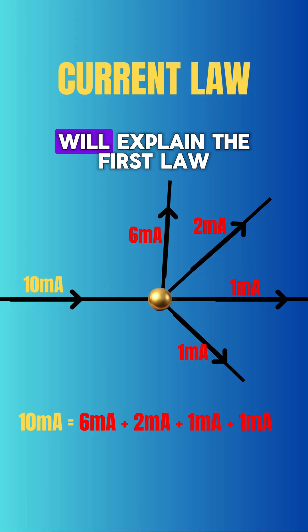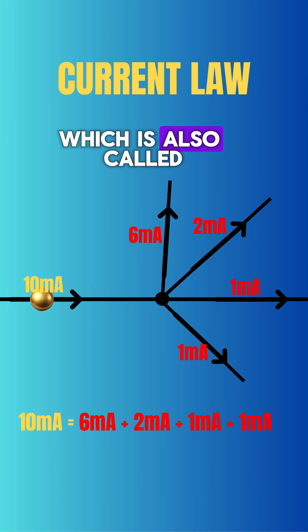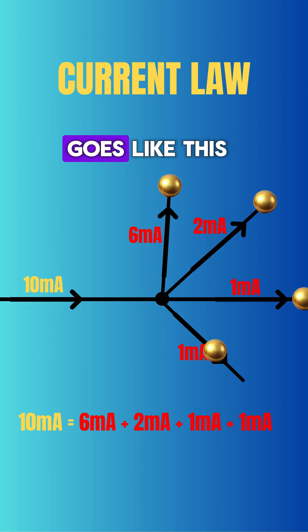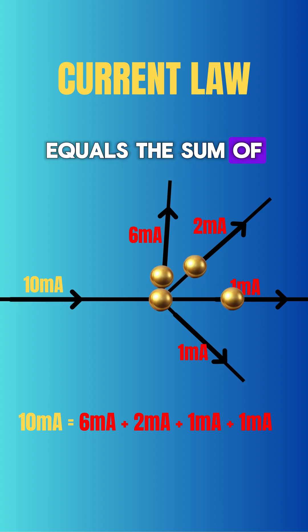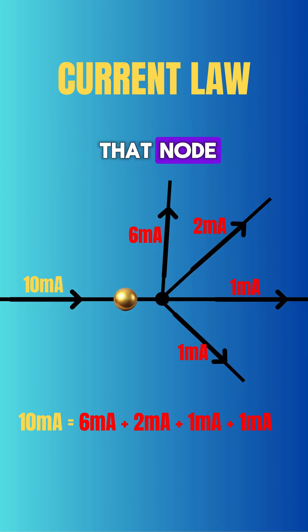In this reel we will explain the first law, which is also called the current law and goes like this. The sum of currents flowing into a node equals the sum of currents flowing out of that node.